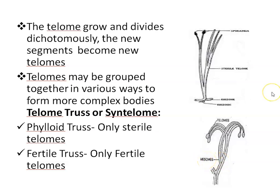Telomes may be grouped together in various ways to form more complex bodies called telome trusses or syn-telomes. There are two types: phylloid truss, consisting of only sterile telomes, and fertile truss, consisting of only fertile telomes.